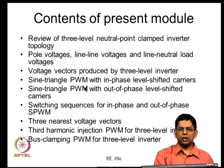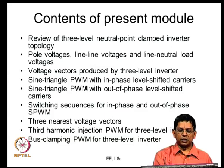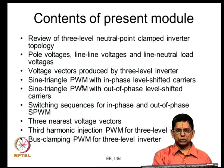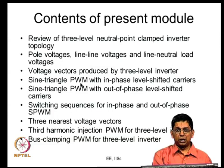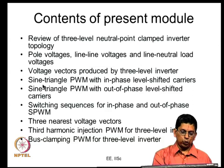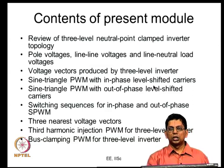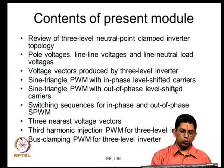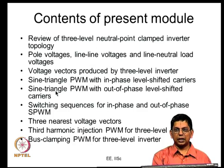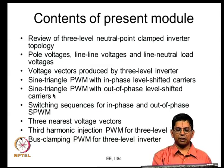Everything we did — like sine-triangle PWM — was done for a two-level inverter, and we try to extend it to the three-level inverter. In a two-level inverter, sine-triangle PWM is fairly simple: one sinusoidal modulating signal for a phase is compared with a triangular carrier, and the output gives complementary gating signals for the top and bottom devices. For a three-level inverter, each leg has two sets of complementary devices, so you need two gating signals. One possibility is to use a single modulating signal and compare it with two level-shifted carriers.